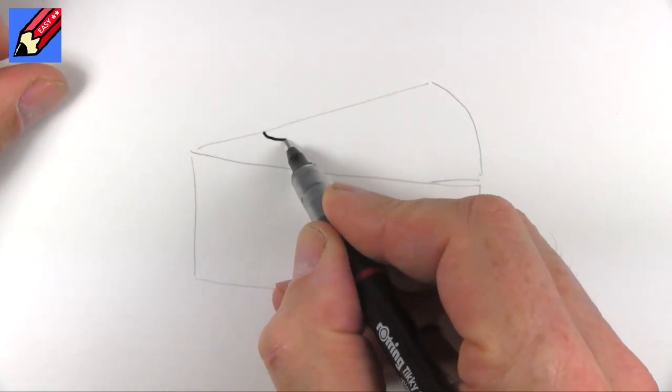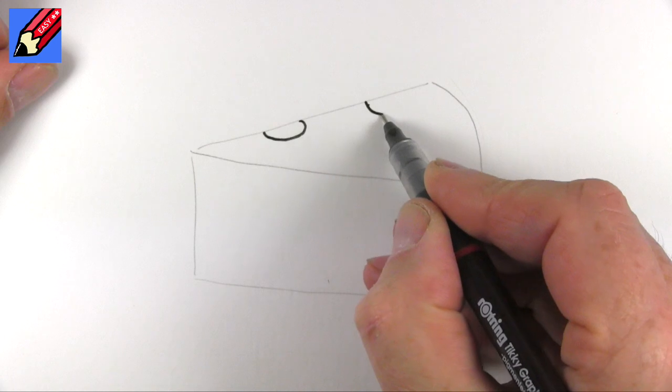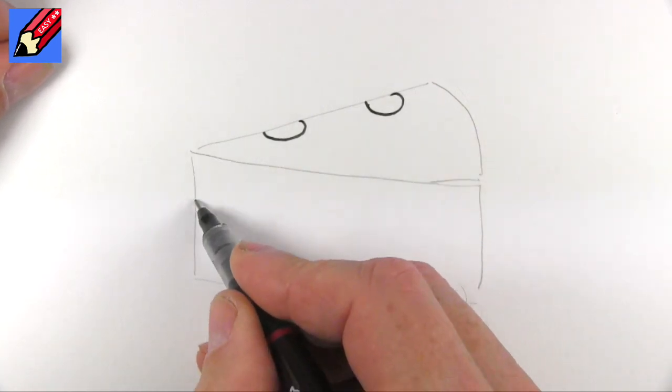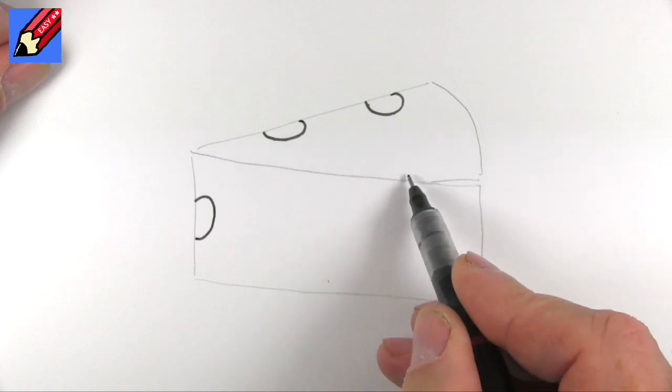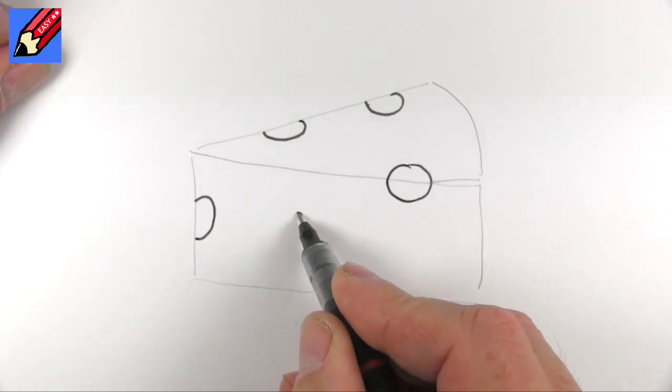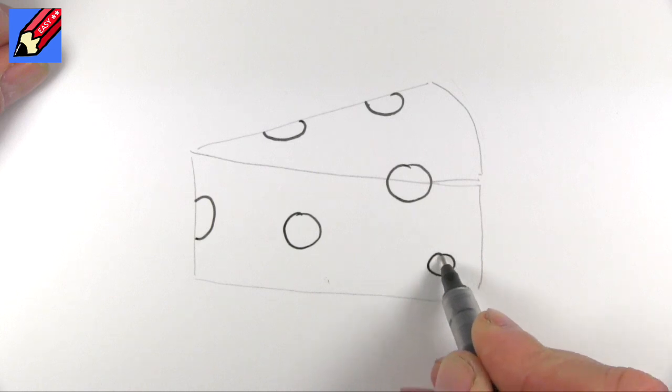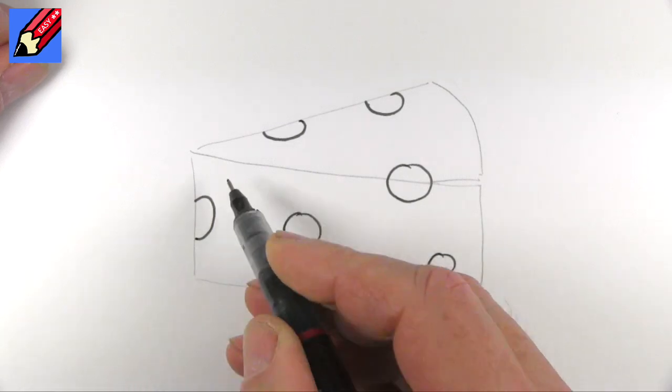So what we're going to do is we're going to draw curves, little circle-y things like that. And we'll have one across there as well maybe. And one there and one there. And then let's have one there as well.